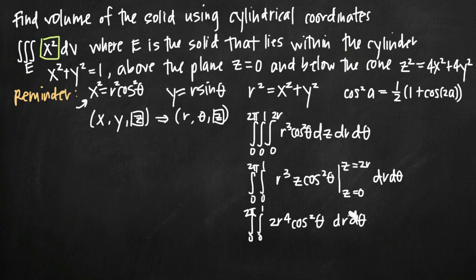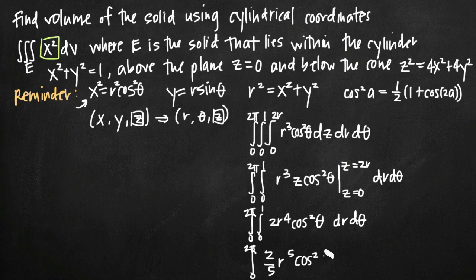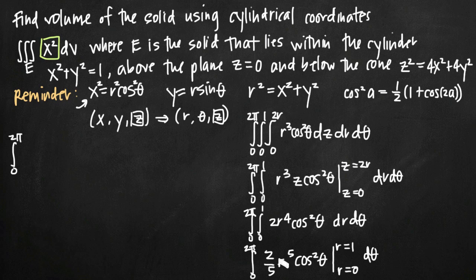Next we integrate 2r to the fourth cosine squared theta with respect to r. Integrating r to the fourth gives r to the fifth divided by 5, so we get 2 fifths r to the fifth cosine squared theta. Evaluating from r equals 0 to r equals 1: plugging in r equals 1 gives 2 fifths cosine squared theta, and plugging in r equals 0 gives 0. So we're left with the integral from 0 to 2pi of 2 fifths cosine squared theta d theta.